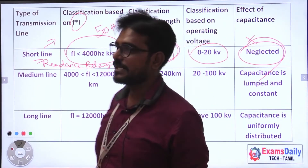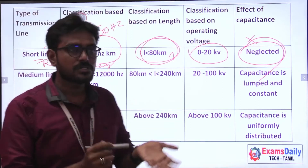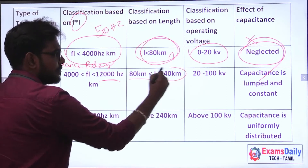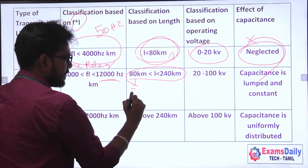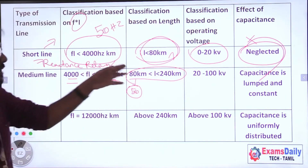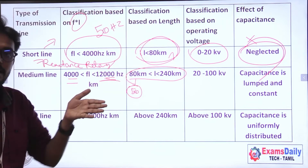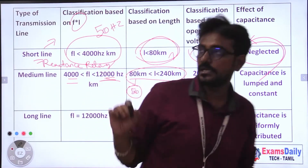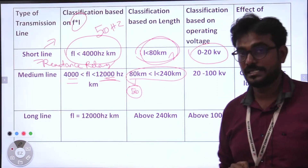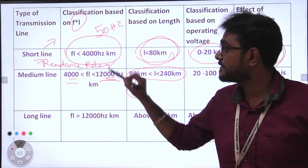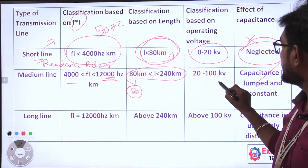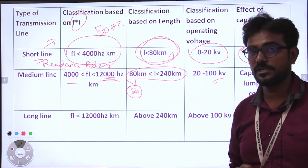Next is medium transmission line. For medium transmission, the frequency-length product is 4000 to 12,000. If you look at the km range, with frequency 50 Hz, it works out to 80 km to 240 km. The operating voltage for medium transmission line is 20 to 200 kV.